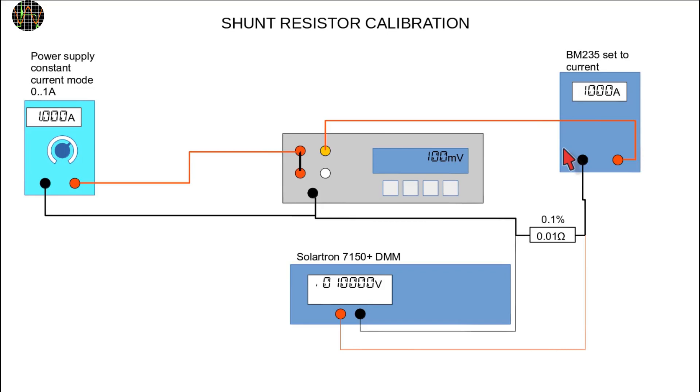Powermon can then use the shunt voltage it sees and the known 1A current to calculate the actual shunt resistance value that would produce the seen voltage drop at 1A of current.